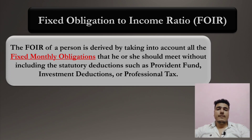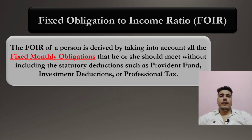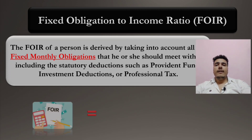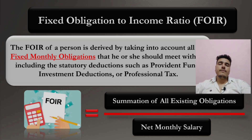Whatever EMIs you are paying and whatever rent you are paying in that particular month, you add all of that to get your fixed monthly obligations. Then you divide it by your net monthly salary — whatever you are getting in hand. This is how you calculate the Fixed Obligation to Income Ratio.